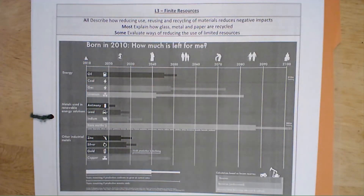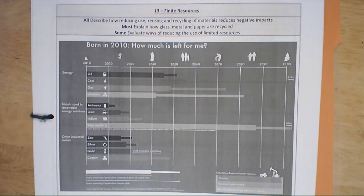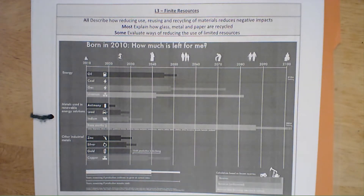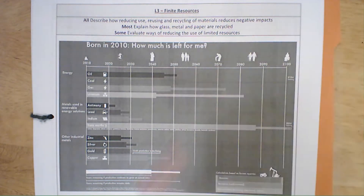In this lesson we're going to be looking at finite resources. Here we have a graph that shows lots of different resources: oil, coal, gas, uranium, and some of the more common metals. It shows how long is projected until those resources run out. A finite resource is a resource that will run out.